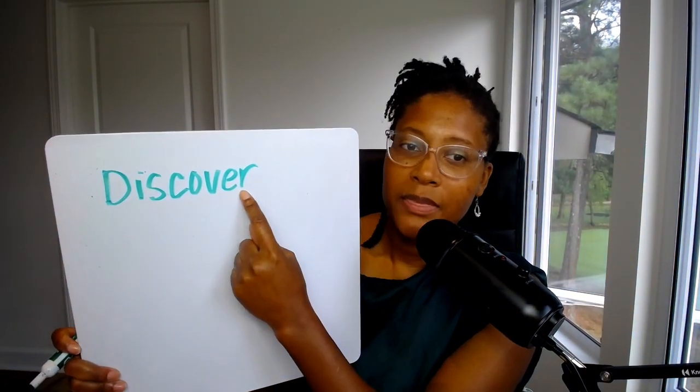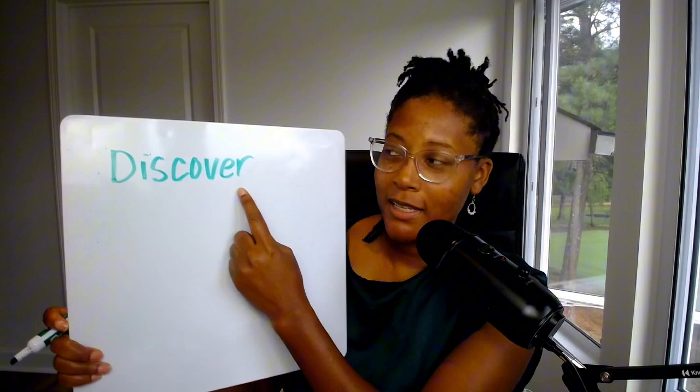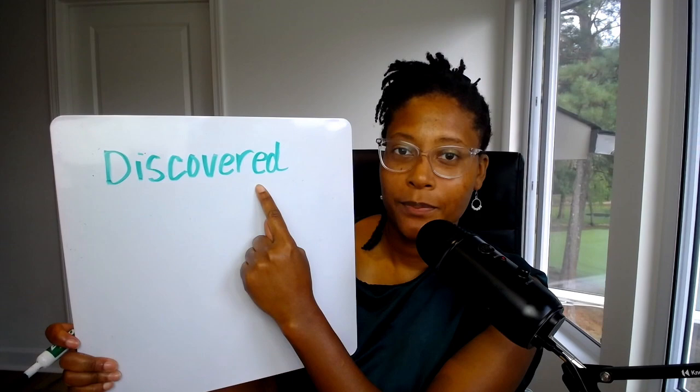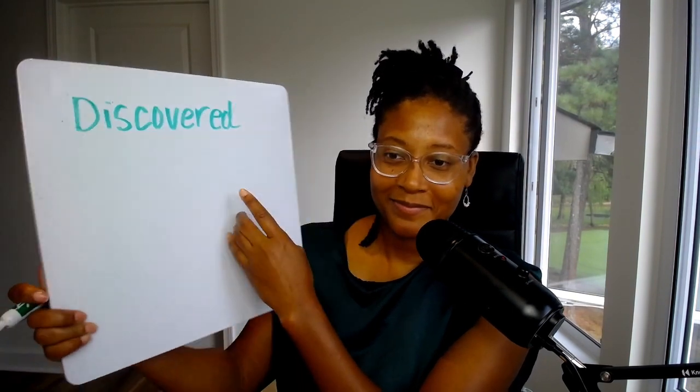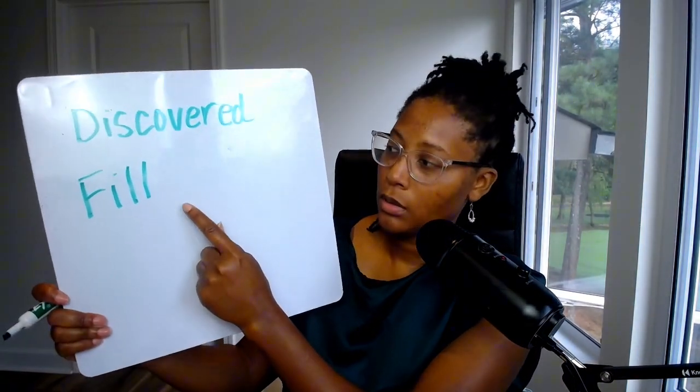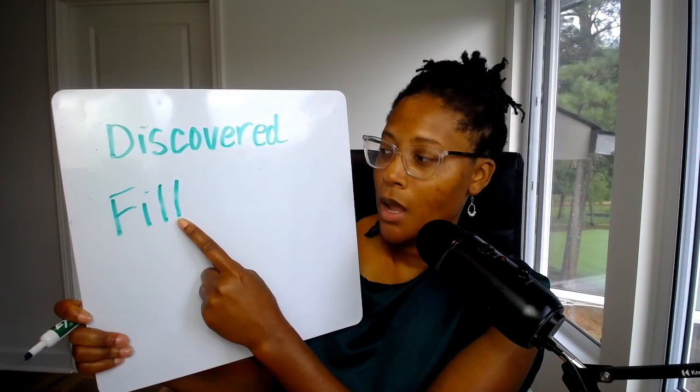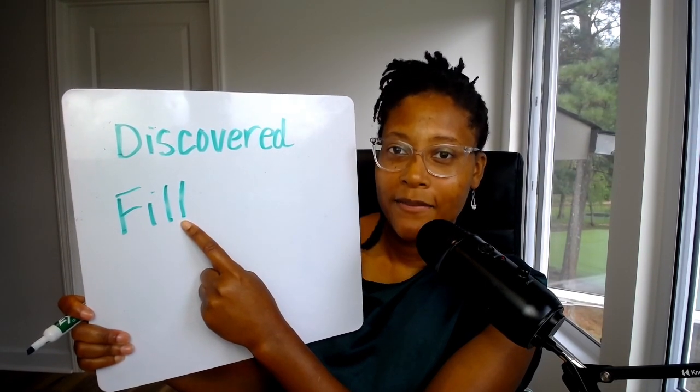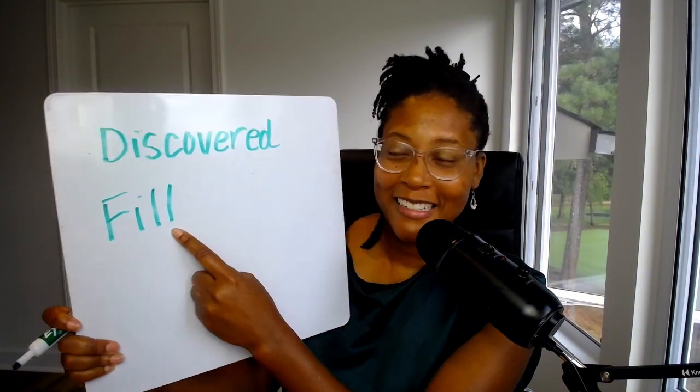Last category — hang in there, you're doing great. The D category: if I have the verb 'discover,' this R falls under the D category. So when I add the ED to it, I'm going to say: discovered. Another one would be 'feel' — the last letter is an L. So when I say 'feel' in the past tense: felt. That's how it's pronounced.